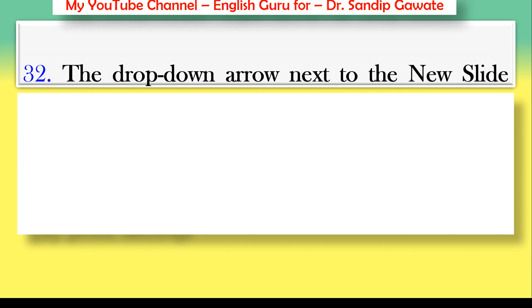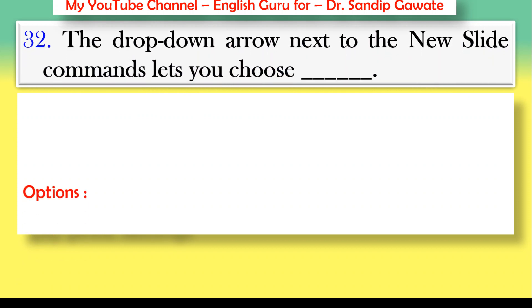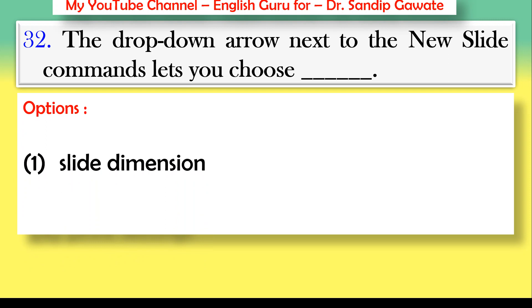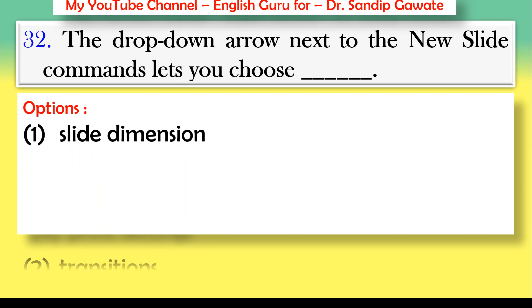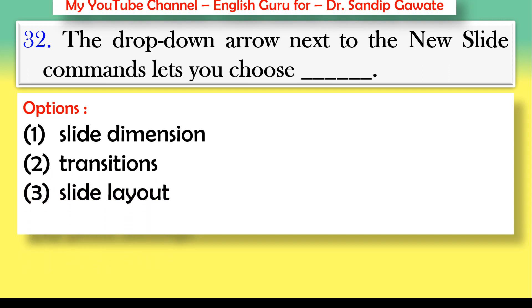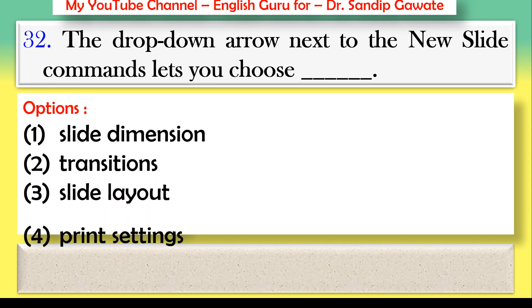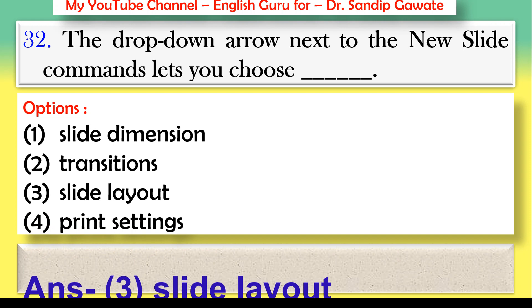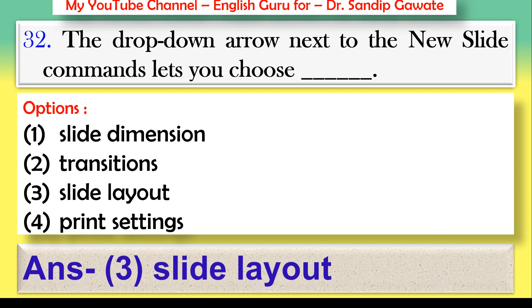Question 32: There are a total of 40 questions based on these four points. The drop-down arrow next to the New Slide command lets you choose — slide dimension, transitions, slide layout, or print settings? The correct answer is option number three — slide layout.